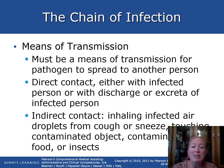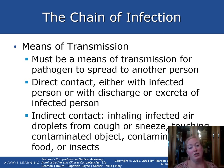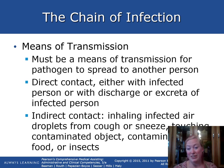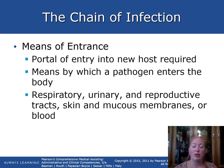There must be a means of transmission for a pathogen to spread from one person to another. In Typhoid Mary's case, she prepared contaminated food. Direct contact includes contact with an infected person or their discharge. Indirect contact includes inhaling infected air droplets from coughing or sneezing, touching contaminated objects, eating contaminated food, or transmission via insects.